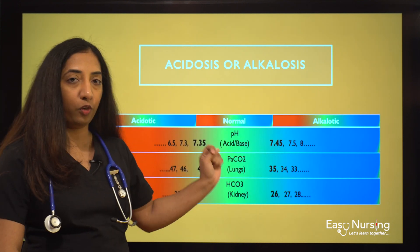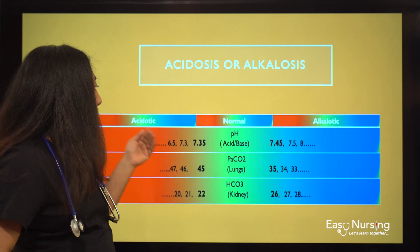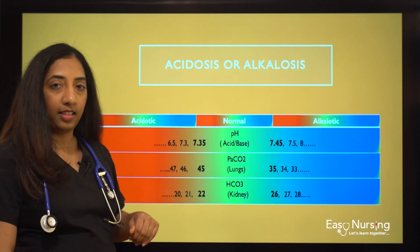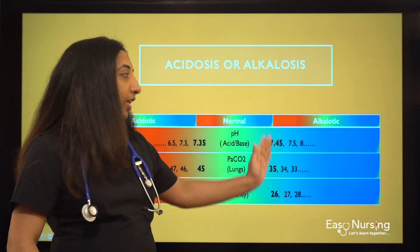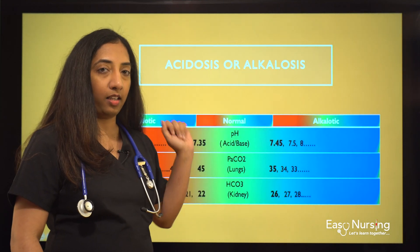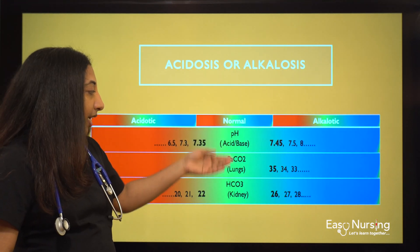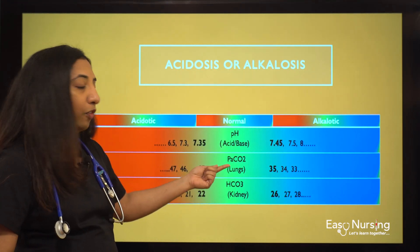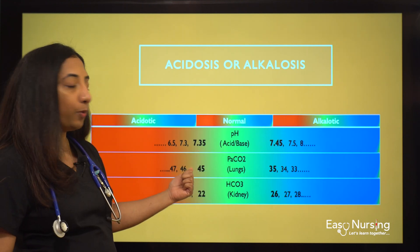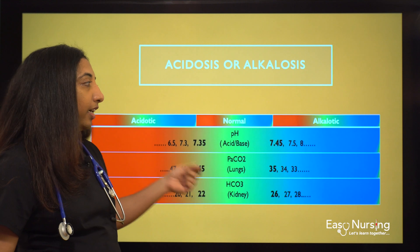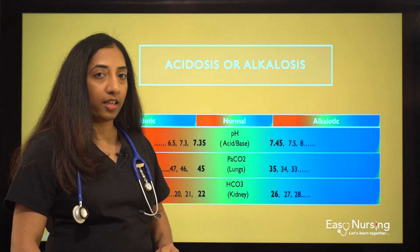For pH, the normal range is 7.35 to 7.45. Whatever comes below the normal value is acid or acidotic, and if it is above the normal value it is base or alkalotic. The same applies for bicarb. But for PaCO2, if it is above the normal value it is acid, and if it is below the normal value it is alkalotic.